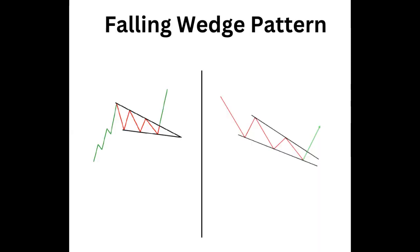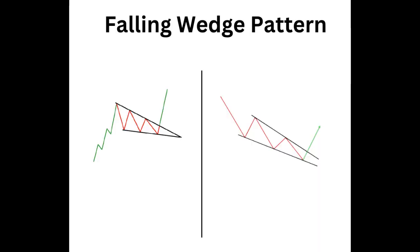A falling wedge pattern shows a bullish pattern. In the images, we see two classes of bullish patterns: a continuation pattern on the left and a reversal pattern on the right. When the falling wedge forms an uptrend, as shown on the left, it will most likely continue after a brief consolidation period. During the consolidation period, prices reach lower highs and lower lows.